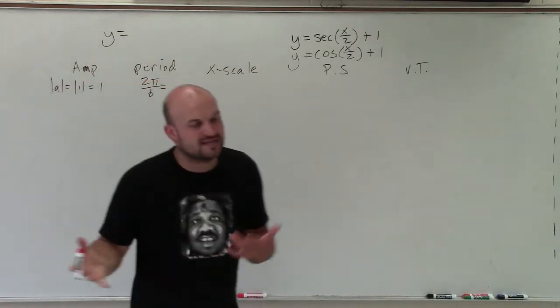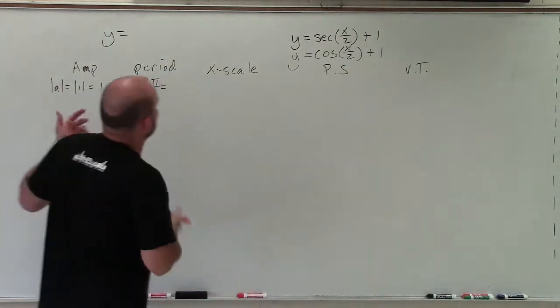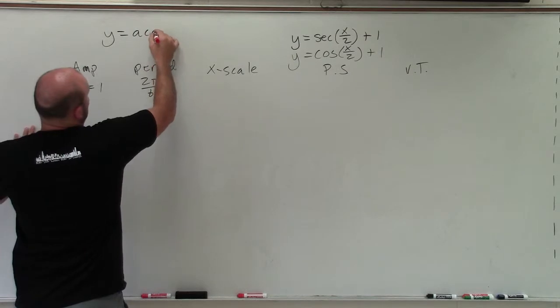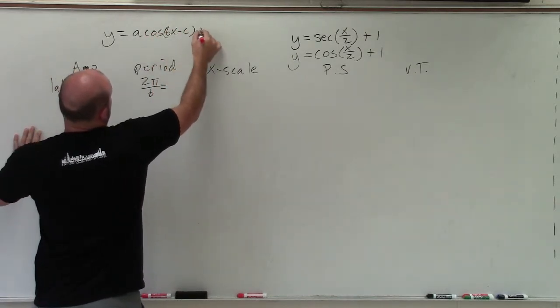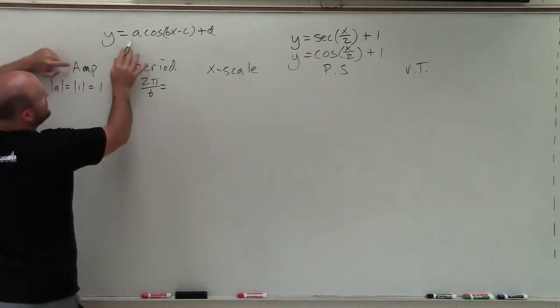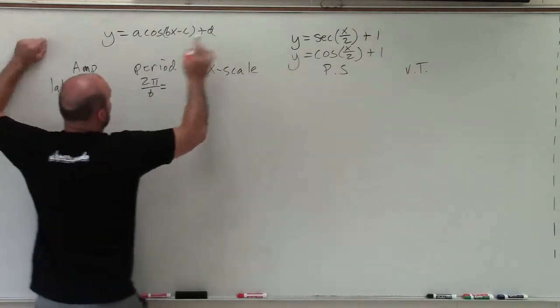It doesn't matter if it's secant, cosine, sine, tangent, whatever. It's a cosine of bx minus c plus d. OK, so a was the coefficient of cosine, which here is 1.